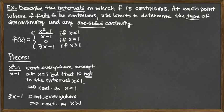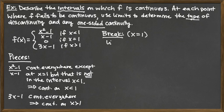By assessing those two pieces individually, we realize we don't have any problems with continuity within a piece, which means we've got to look now at the break in the domain. We do some sort of switchover between all the pieces at x equals 1, so we're really looking at x equals 1 as our only break. At x equals 1, we have to individually look at the left-hand limit, the right-hand limit, and the function value, and based on those three answers we can assess continuity and any type of discontinuity or one-sided continuity.